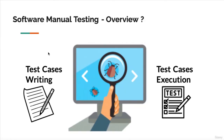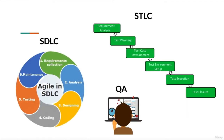At a high level, what a software tester does is write test cases, execute them, prepare the execution report, and give a sign-off on whether the product should go live or not. Based on the sign-off, it will proceed to the next step. Before going further, we need to understand SDLC and STLC — software development life cycle and software testing life cycle.